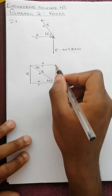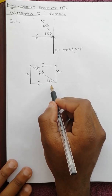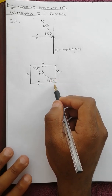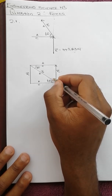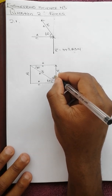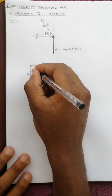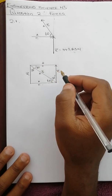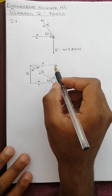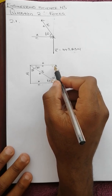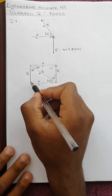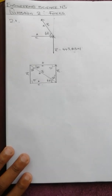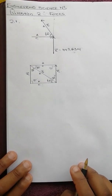Since this force is acting vertically upwards and this one is acting horizontally, this becomes a 90-degree angle. Then this will be 30 degrees and also this will be 30 degrees. According to properties of a parallelogram, the other angles will also be 90 degrees.